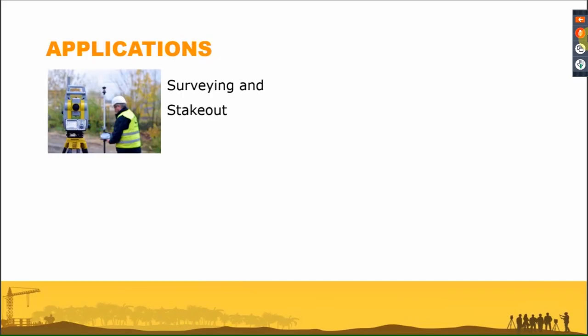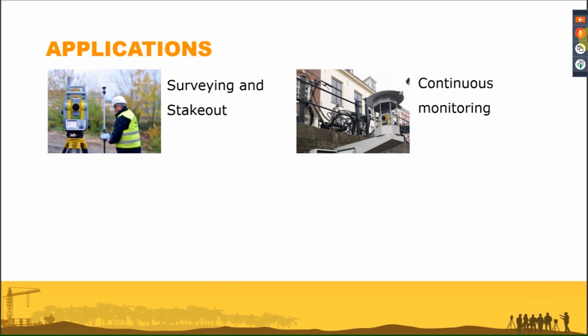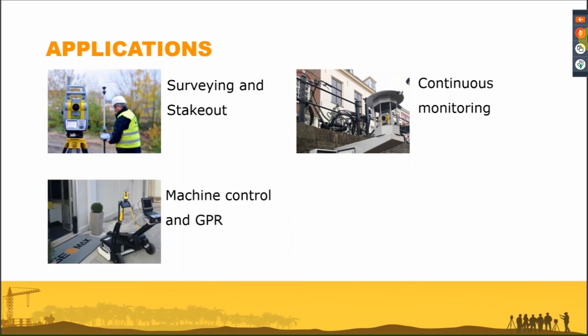In terms of applications: for sure, the robotic total station can be used for standard surveying and stakeout in a one-man configuration. But not only that — for example, we can also use it for continuous monitoring, because the motors inside allow it to automatically measure a prism over time. This is not a different type of instrument: the same total station I use for stakeout on a construction site one day, I can use for continuous monitoring the next.